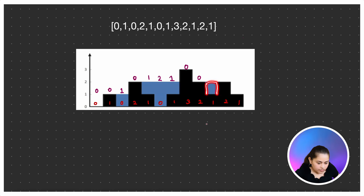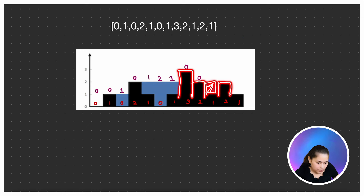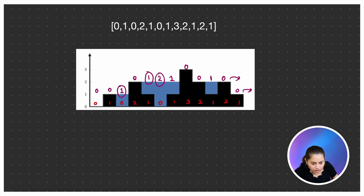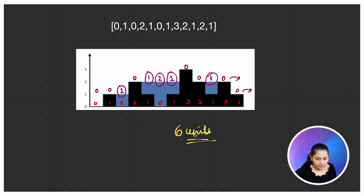For this bar, 1 unit of water can be trapped with the help of the surrounding bars. For the 0-height bar it overflows so that's 0. How many units total can be accommodated? 1, 1, 1, 1, 1, 1 — so 1+1+2=4, totaling 6 units of water. 6 units of water can be accommodated.